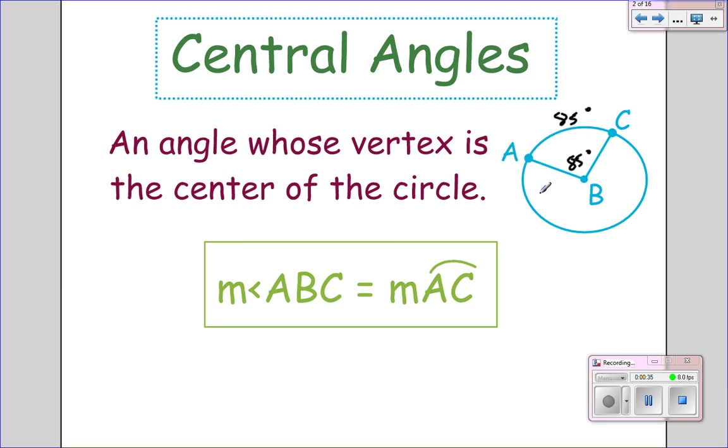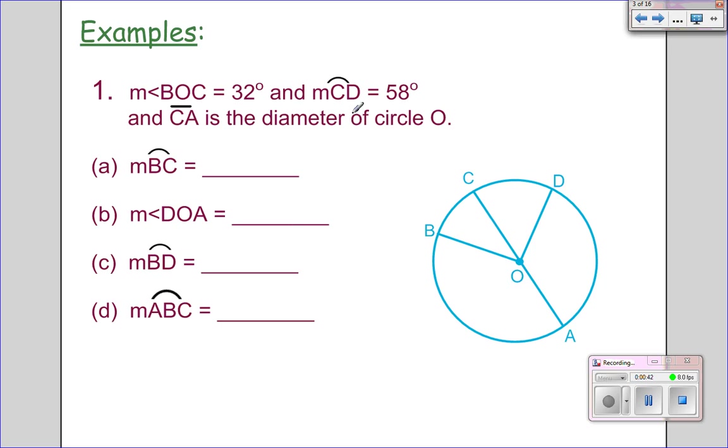Recall one more time that a circle has 360 degrees in it as well. Alright, so let's look at this problem. We have the measure of angle BOC. BOC equals 32 degrees and that's a central angle. Therefore the arc that it intercepts is also going to be 32 degrees.